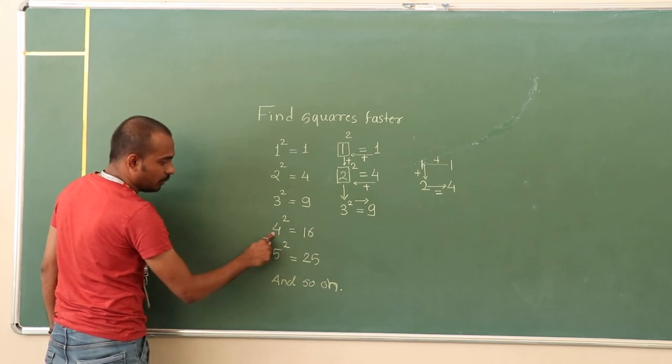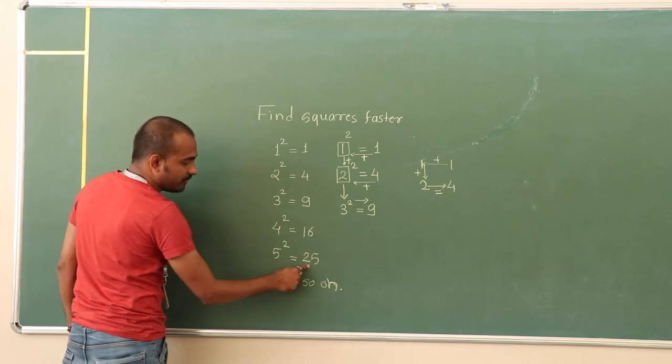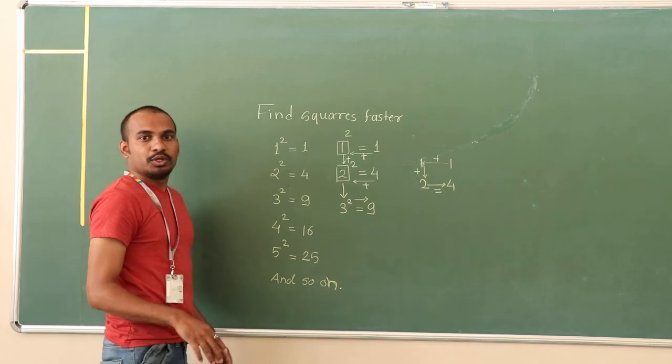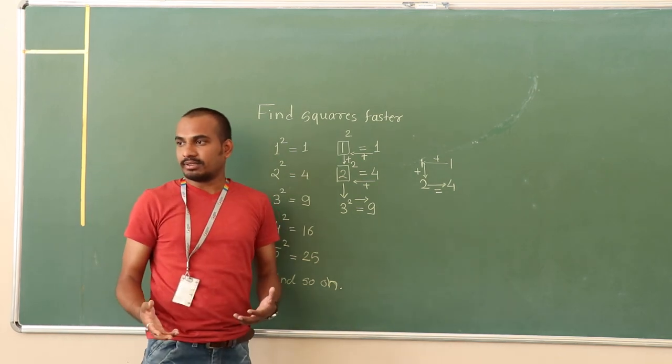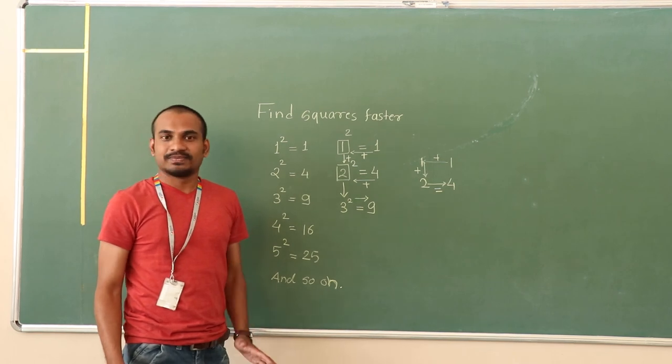Now, 16 plus 4 is 20, and 20 plus 5 is 25, which is nothing but square of 5. In this way, if you follow, you will get a square of any number. You can try the next series like this. Thank you so much.